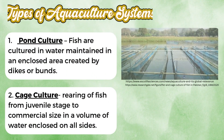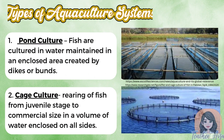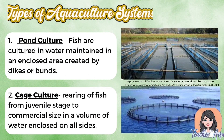There are several types of aquaculture systems used around the world and here in the Philippines. First, we have pond culture, where fish are cultured in water kept in an enclosed area made by dikes or bunds — one of the oldest and most common practices, especially for raising tilapia and milkfish. Next is cage culture, where fish are reared from the juvenile stage until they reach commercial size inside a cage placed in rivers, lakes, or coastal waters, allowing water to flow freely and giving the fish a natural environment to grow.